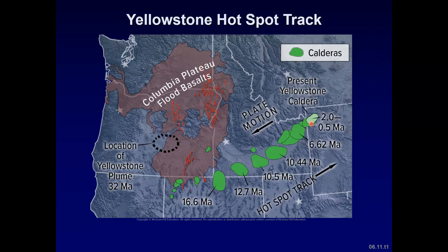If you look at Google Earth, you'll see the Snake River Plain is a lower area across Idaho to Wyoming. And over here we have the Columbia Plateau Flood Basalts.